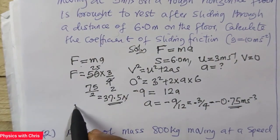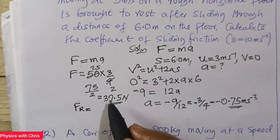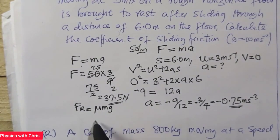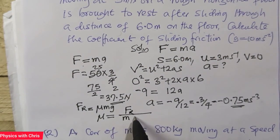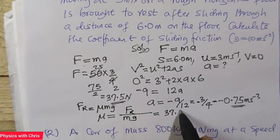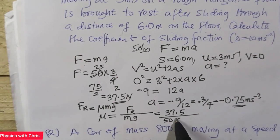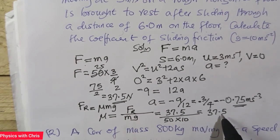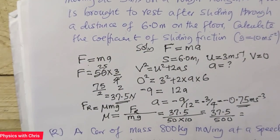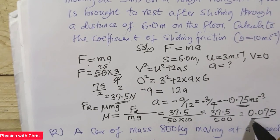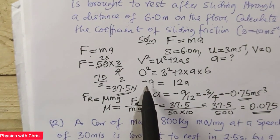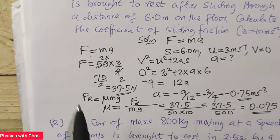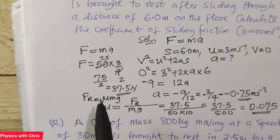Now the coefficient of sliding friction: the frictional force FR equals μmg. So μ equals the frictional force divided by the mass times g — that is 37.5 divided by 50 × 10, giving 37.5 divided by 500, which gives 0.075. The negative sign is dropped here because we are looking for the magnitude of the decelerating force, and magnitude does not include the negative sign.